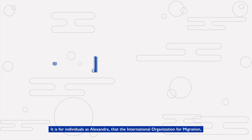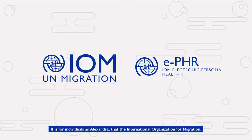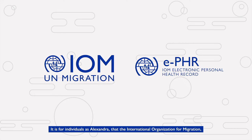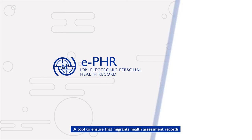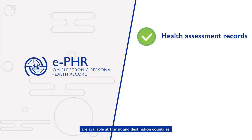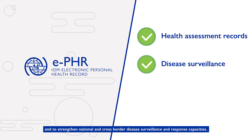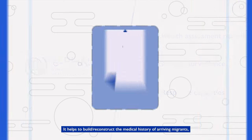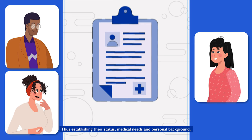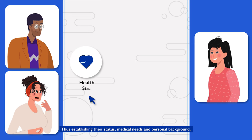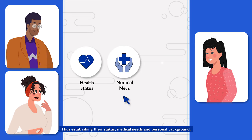It is for individuals like Alexandra that the International Organization for Migration created the ePHR tool — a tool to ensure that migrants' health assessment records are available at transit and destination countries, and to strengthen national and cross-border disease surveillance and response capacities. It helps to build or reconstruct the medical history of arriving migrants, thus establishing their status, medical needs, and personal background.